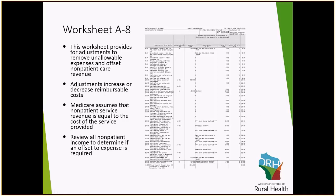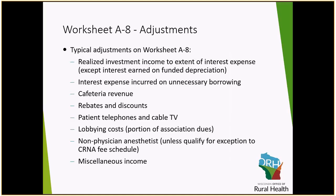Going down column 1 of Worksheet A8, we identify whether we're offsetting revenue or expenses using an A for expenses and B for revenue. Common adjustments on Worksheet A8 include: cafeteria revenue is non-allowable; investment income is non-allowable but only needs to be offset up to the level of interest expense, excluding interest on unnecessary borrowing; rebates and discounts are non-allowable; patient telephones and cable TV expenses are non-allowable; lobbying costs are non-allowable; and miscellaneous income is non-allowable.